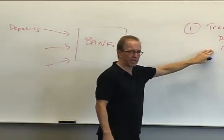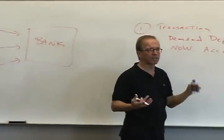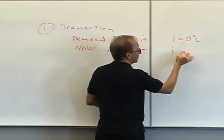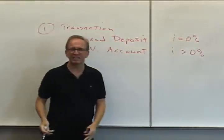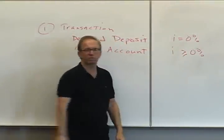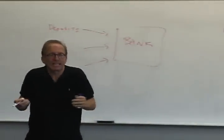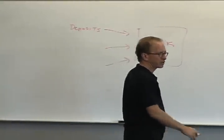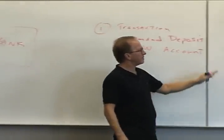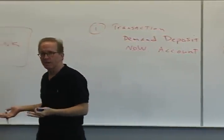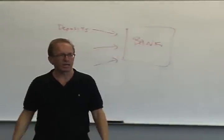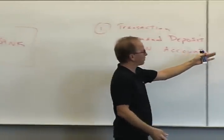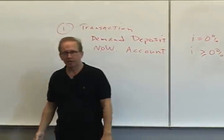The legal difference between the two is there is no interest on a demand deposit, and there is interest on a NOW account - or at least it is legal to pay interest. They could set that interest rate at 0%, but usually they're going to pay something - a tenth of a percent, half a percent, 2%, 6%, or whatever. This really matters during inflationary times when interest rates are high.